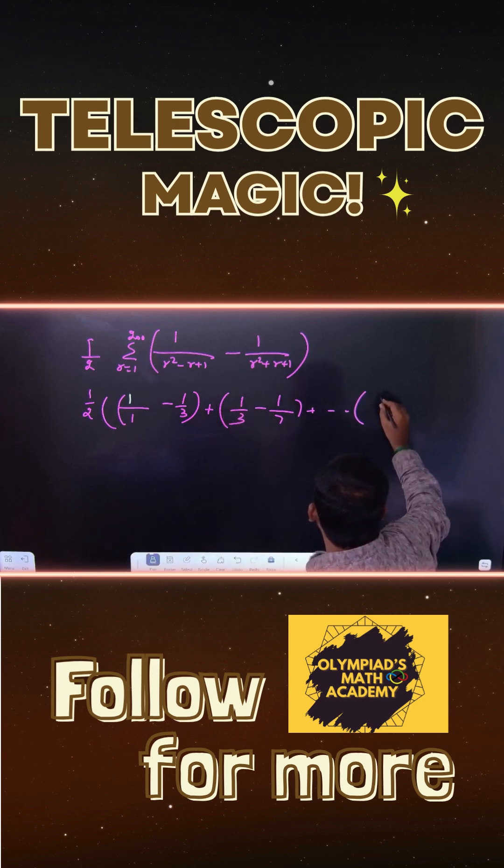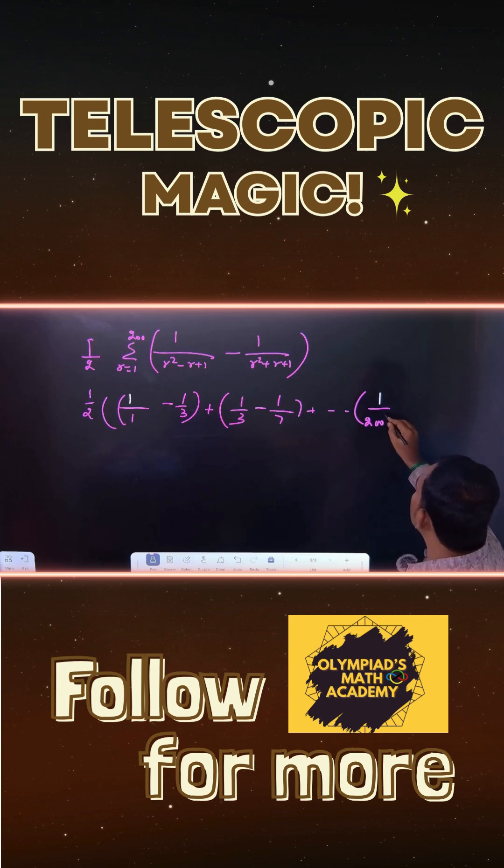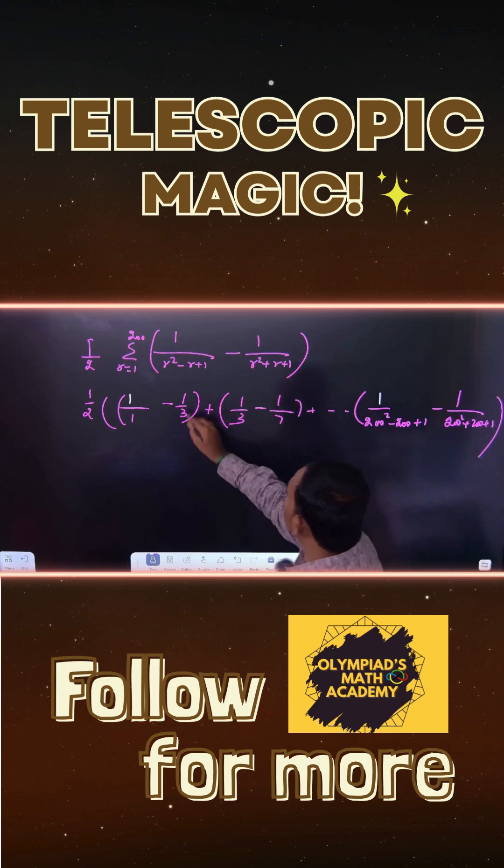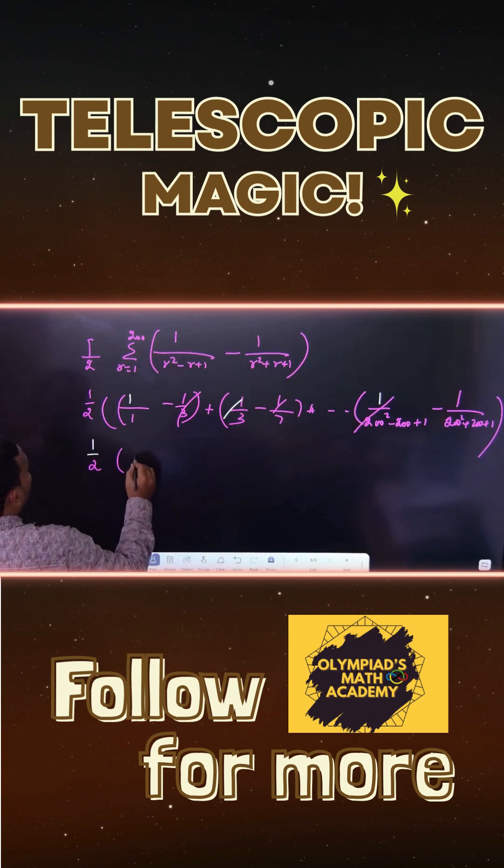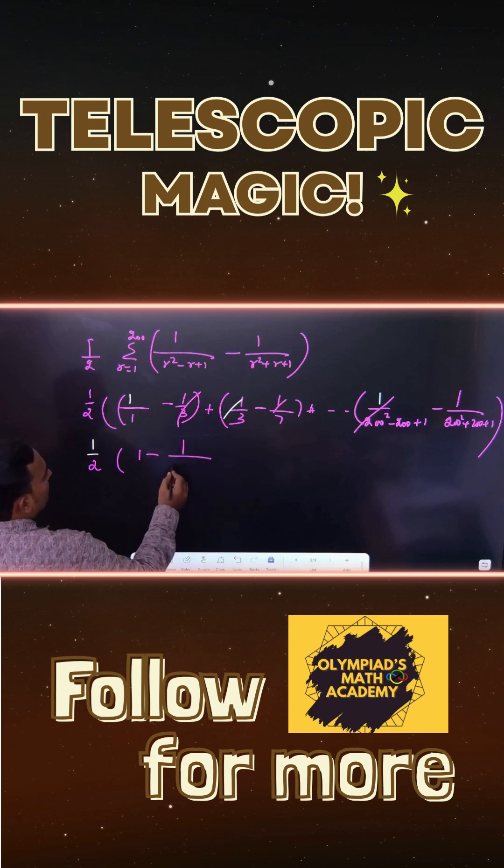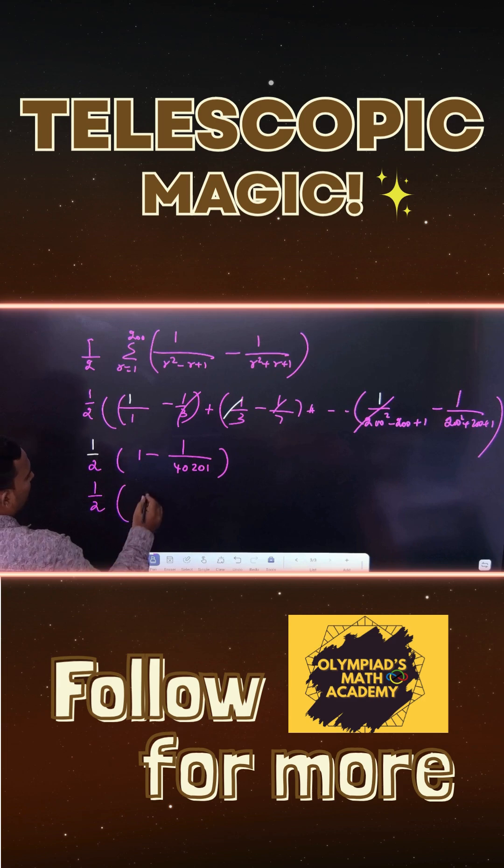You can apply 200: 1 by (200 squared minus 200 plus 1) minus 1 by (200 squared plus 200 plus 1). You can see everything will be cancelled. First and last term only left. 1 minus 1 by 40,000. You take the LCM: 40,200 divided by 40,000. This is your whole expression.